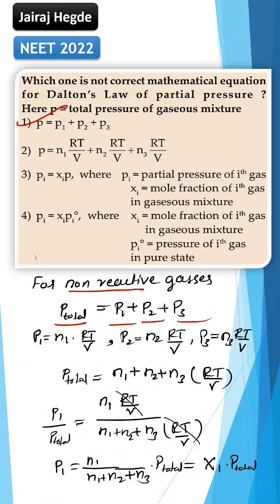As PV equal to nRT, at constant temperature, P1 will be equal to n1 into RT by V. Similarly, for P2 and P3, the total pressure P will be equal to n1 into RT by V plus n2 into RT by V plus n3 into RT by V.